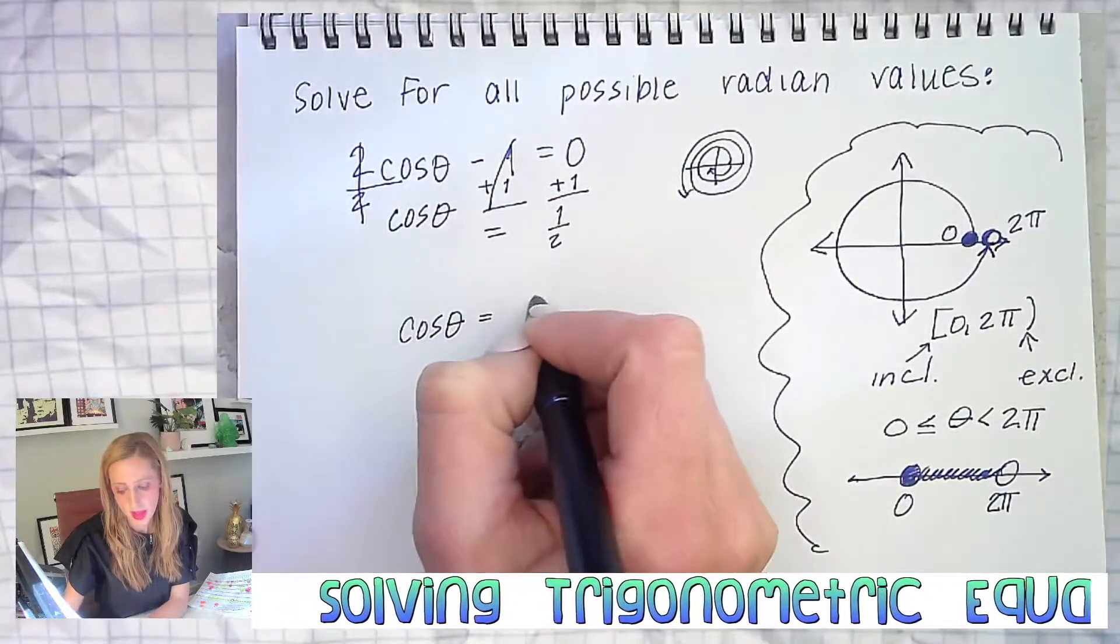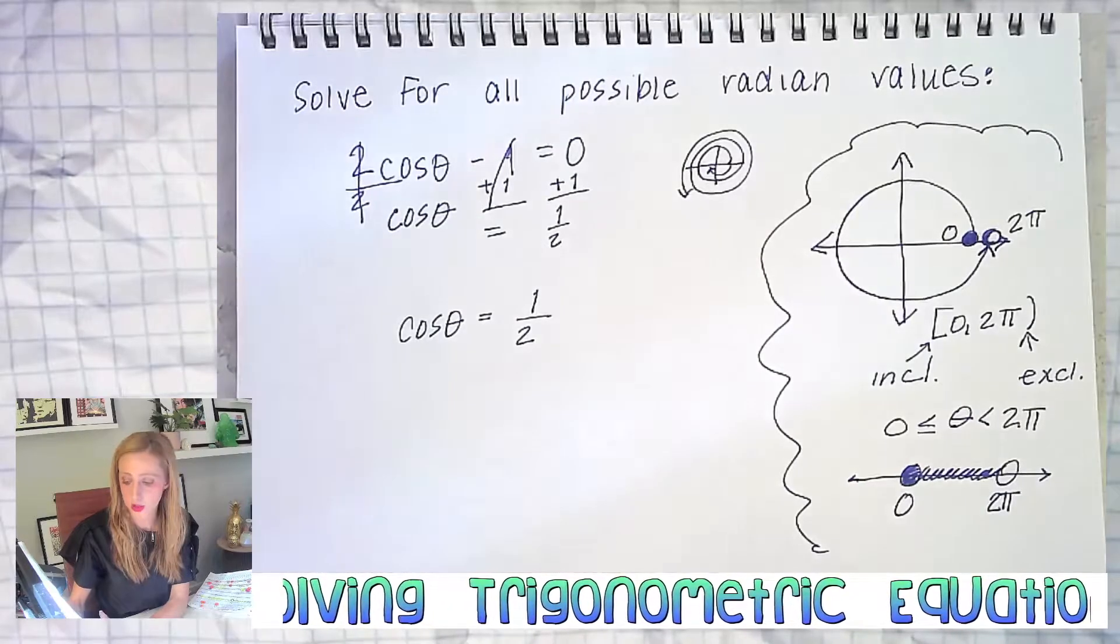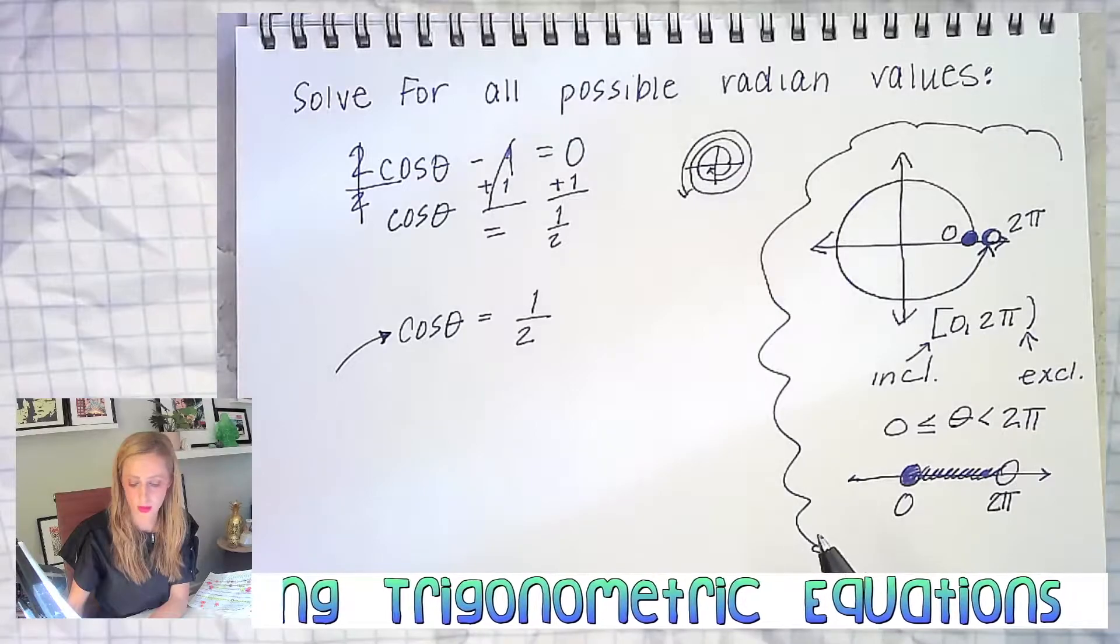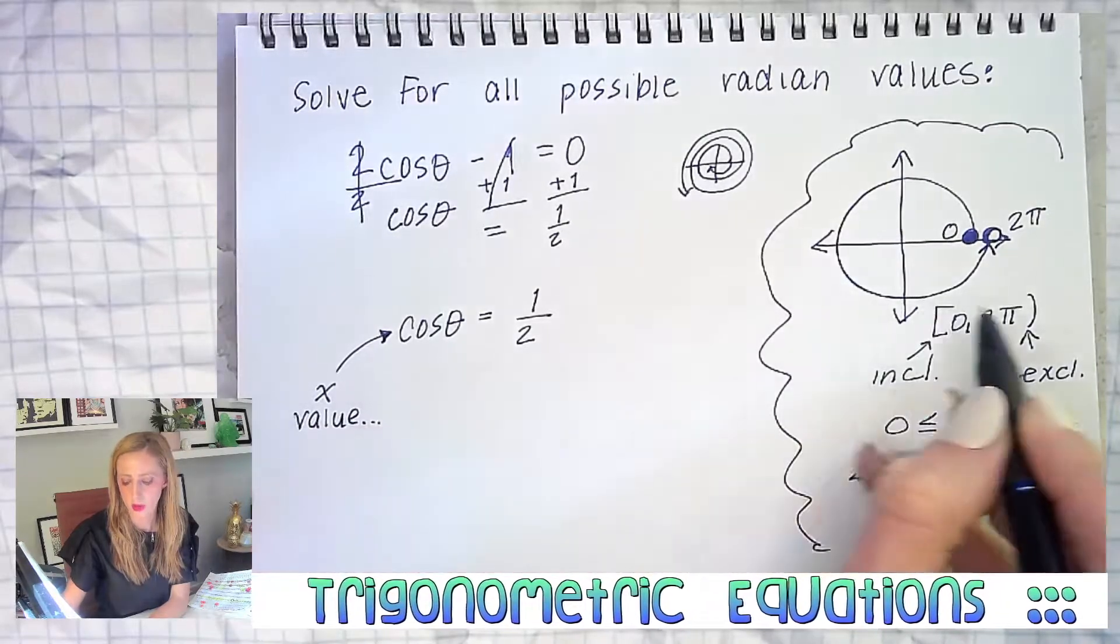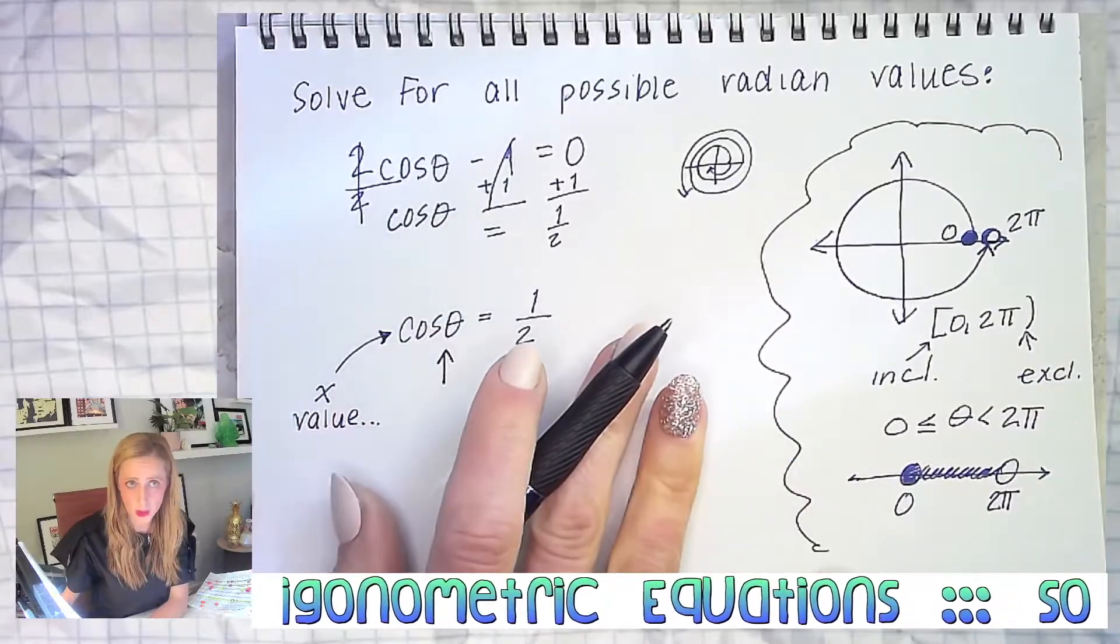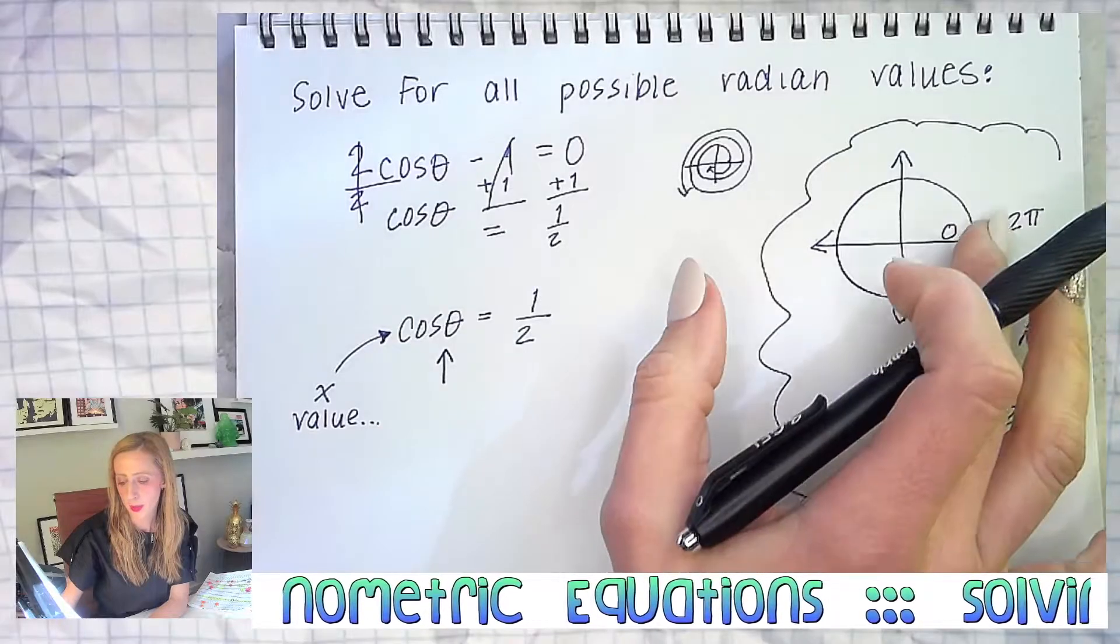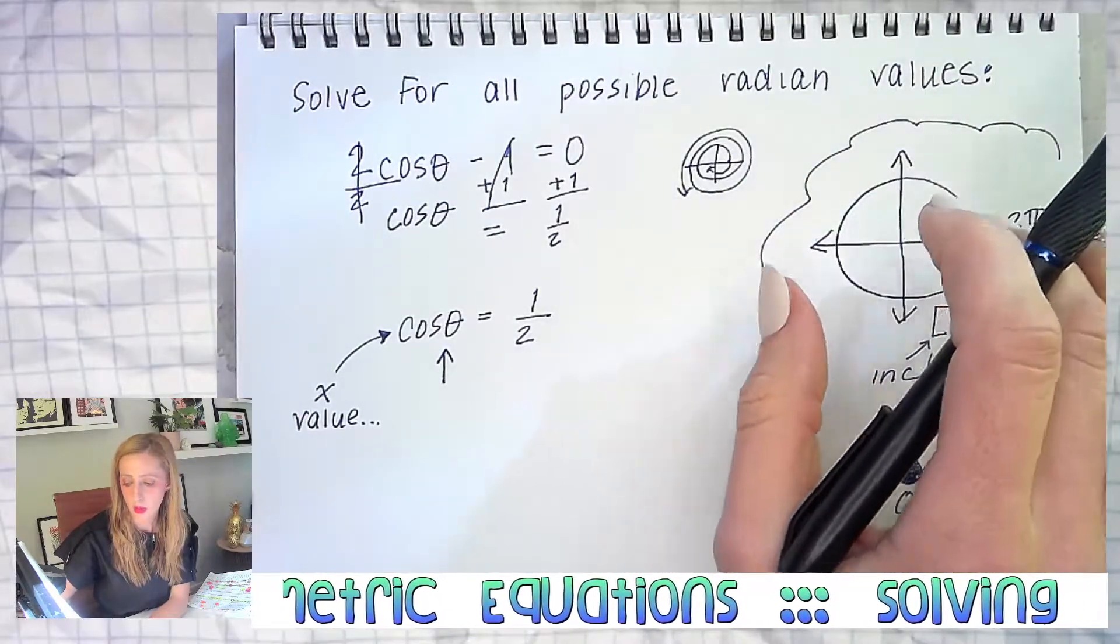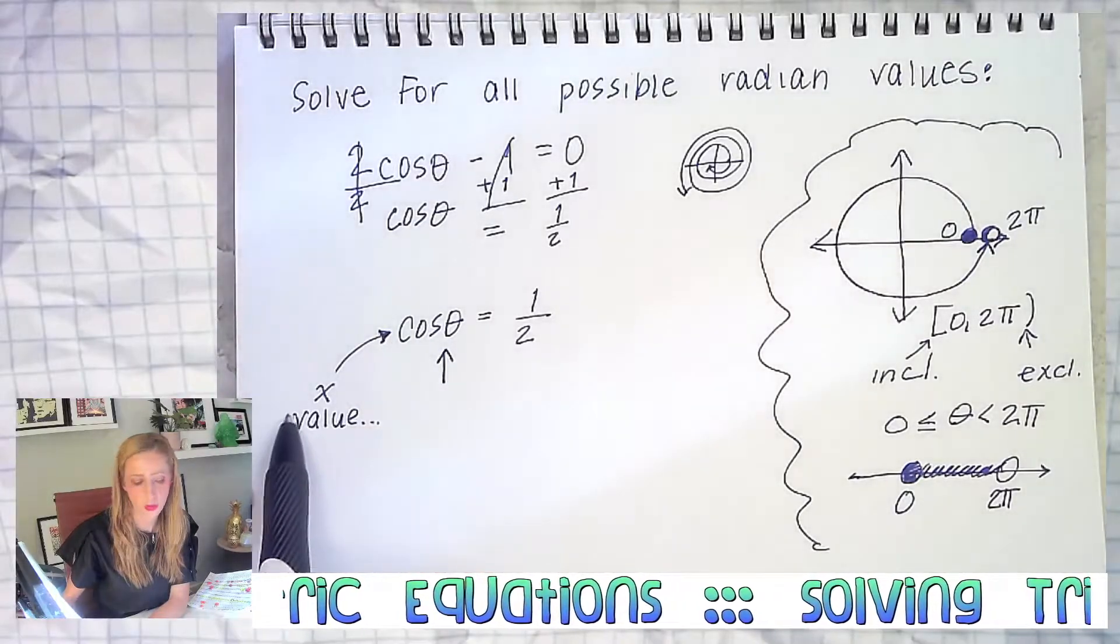Hopefully we're getting better at knowing that cosine and sine correspond to parts of the ordered pairs on the unit circle. Which part of the ordered pair does cosine correspond to - is it the x value or the y value? The x value in the ordered pair. Now the x value on the ordered pair, I want to know which angles. Let's start it the way we did the others - which angles between zero and two pi in one revolution.